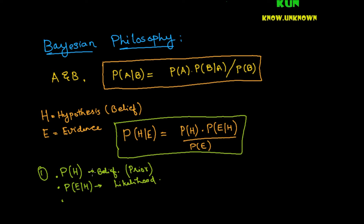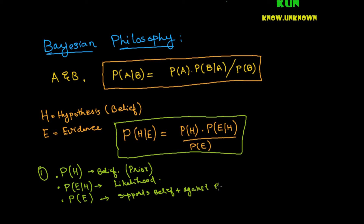The probability of the evidence is a bit tricky — it is actually the total probability of the evidence, both in support of and not in support of the belief. If you are holding a positive belief, this evidence is nothing but the summation of evidence that supports your belief plus evidence that is against your belief. In a numerical sense, it basically acts as a normalizing factor.